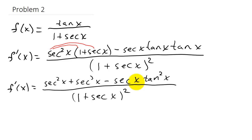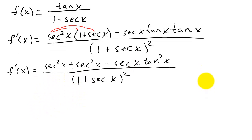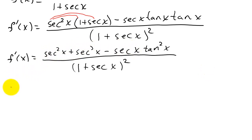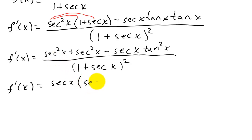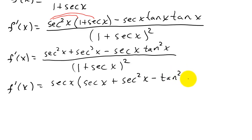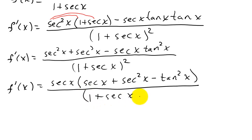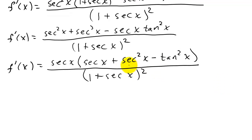It looks like we can factor out a secant x. So f prime of x equals secant x times the quantity secant x plus secant squared x minus tangent squared x, all over 1 plus secant x, squared.